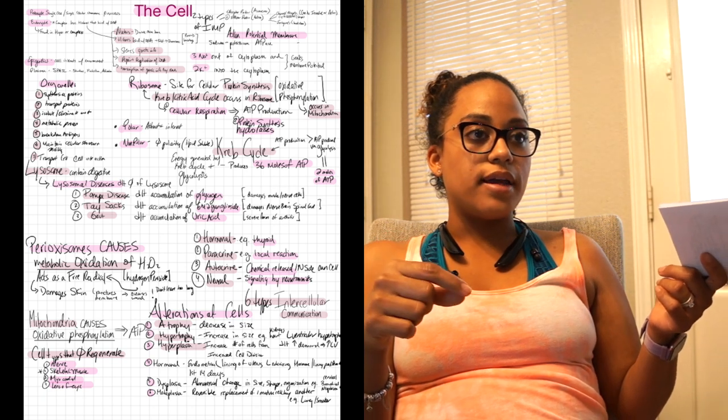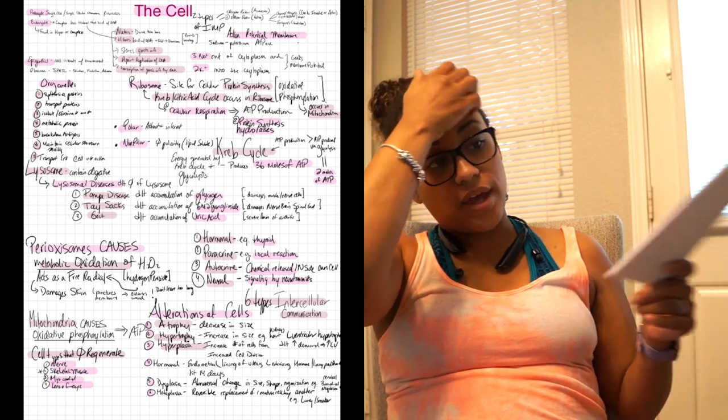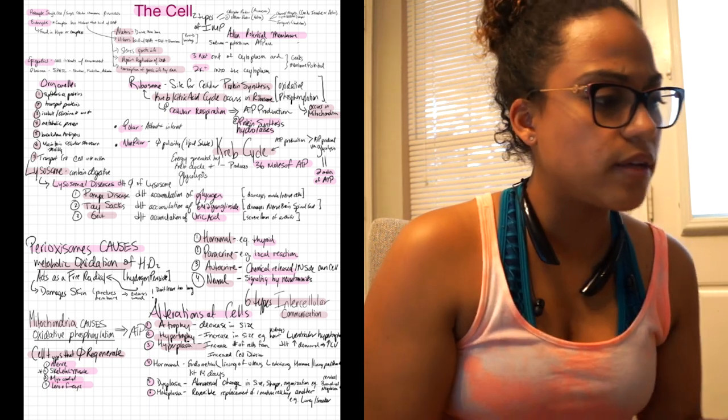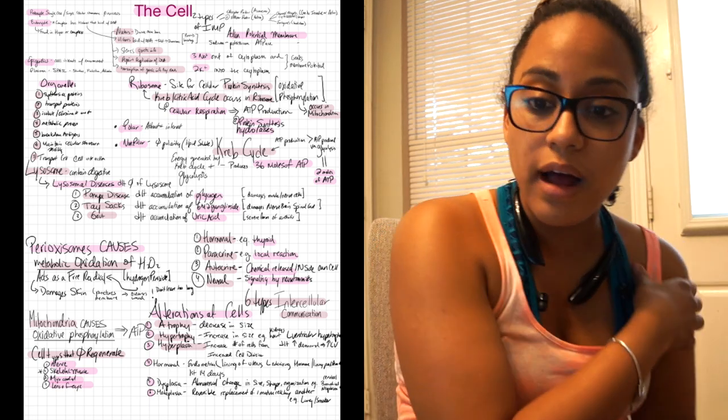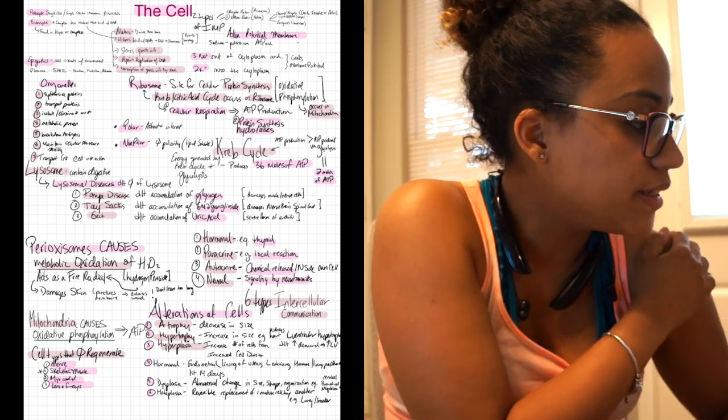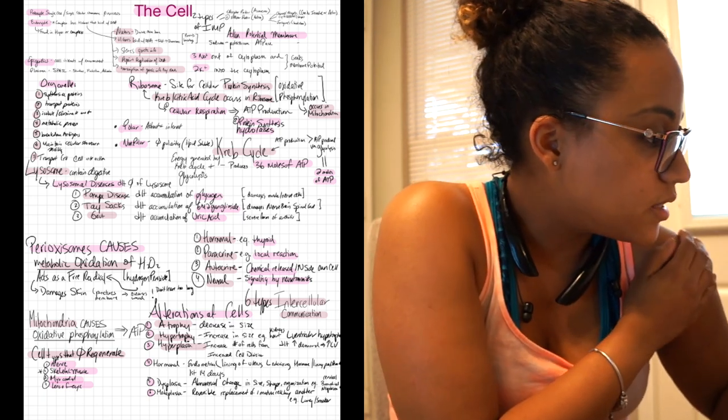Metaplasia: reversible replacement. So metaplasia is reversible, so it's replacing a damaged mature cell with a healthy mature cell. The whole example I think that they were talking about was if someone were a smoker, how the lungs kind of heal and all of that. So that is pretty much it.